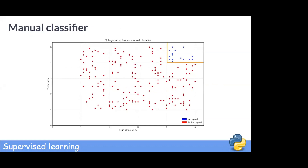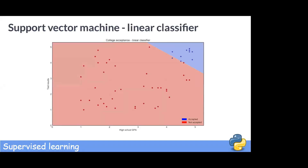For us humans it's pretty clear: if you score above 4 on both the GPA and entrance test, you are accepted. If we added more features like extracurriculars or prizes, we would need more axes, and it would be very hard to interpret the data with a human eye. However, a model wouldn't struggle at all. We can use a support vector machine — it sounds scary, but it's just about separating our points.